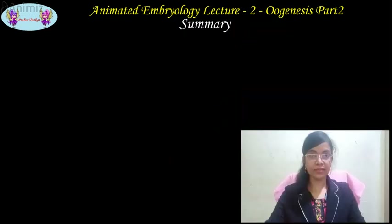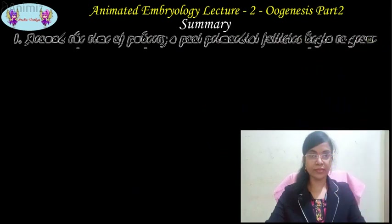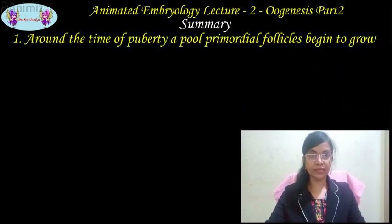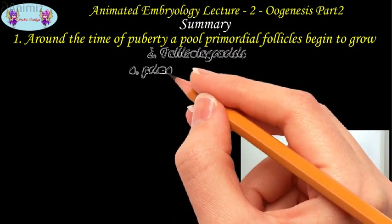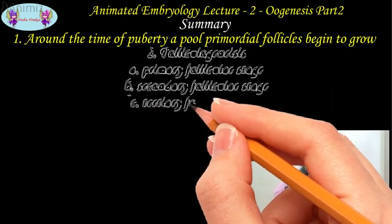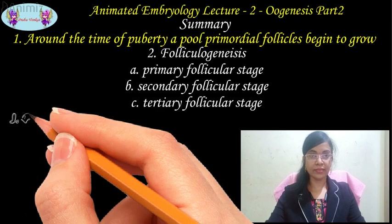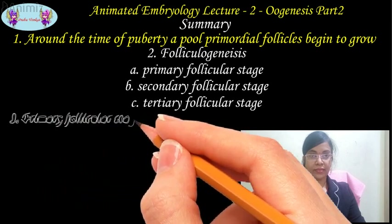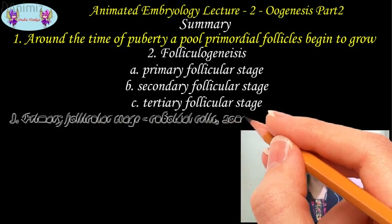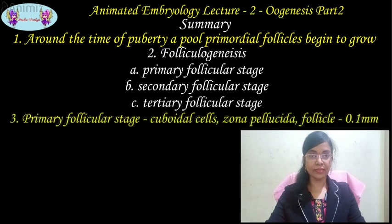Summary: Around the time of puberty, a pool of primordial follicles begins to grow. All these primordial follicles must pass through three stages for folliculogenesis — the primary follicle stage, secondary follicle stage, and the tertiary follicle stage. In the primary follicle stage, the flat follicular cells change into cuboidal cells, the zona pellucida layer is established, and the follicle is around 0.1 mm in diameter.